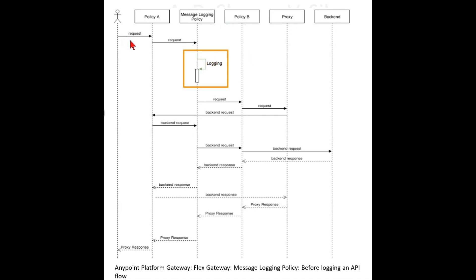The request is passed to policy A, and policy A is connected to message logging policy via request. Message logging policy is connected to policy B via request, and policy B is connected to proxy via request, and proxy is connected to policy A via backend request.